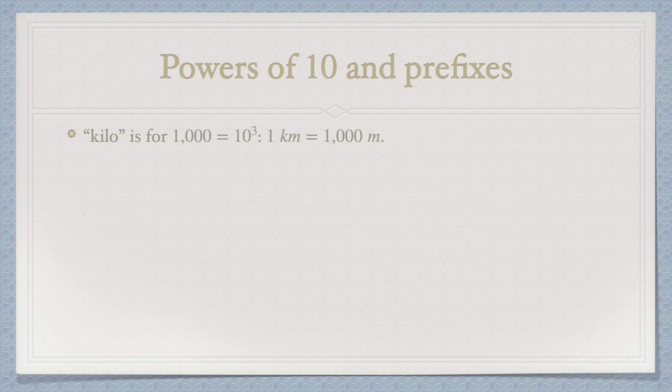For instance, 1 kilometer is 1000 meters. The prefix mega is for multiplication by 1 million, that is 10 to the power 6. For instance, 1 megajoule is 1 million joules.